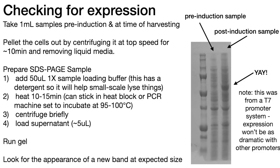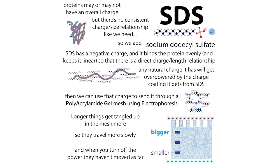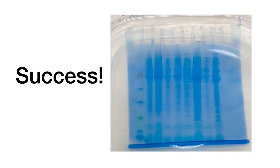We took a sample beforehand so we can run a gel and see whether we already have protein expression in the pre-induction culture — checking for a band at the expected size. Then when we harvest, we'll take another sample and run an SDS-PAGE gel. We'll break open the cells, look at the proteins, and see if there's a nice big fat band corresponding to our protein of interest.